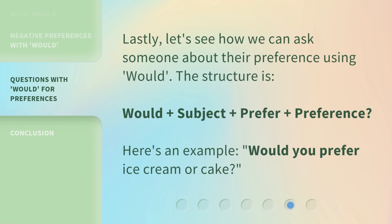Lastly, let's see how we can ask someone about their preference using 'would.' The structure is: would + subject + prefer + preference. Here's an example: 'Would you prefer ice cream or cake?'